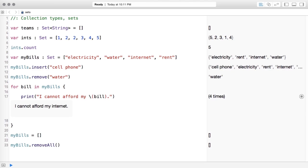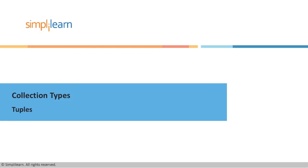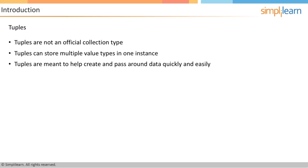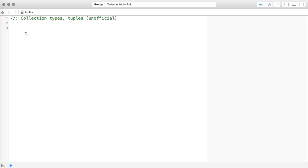We're going to talk about tuples next. Technically tuples are not an official collection type in Swift, but they act like one, which is why they're included here. Tuples can store multiple value types in one instance and are meant to help create and pass around data quickly and easily.